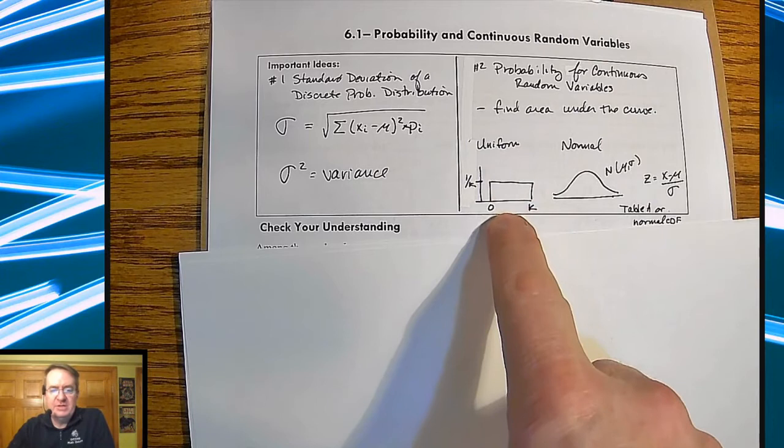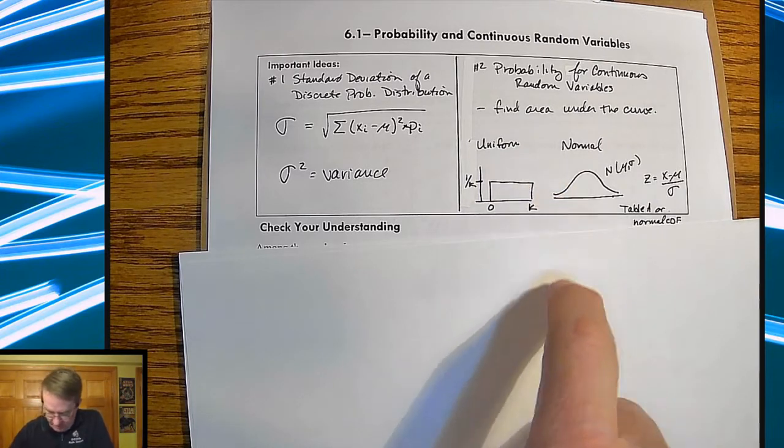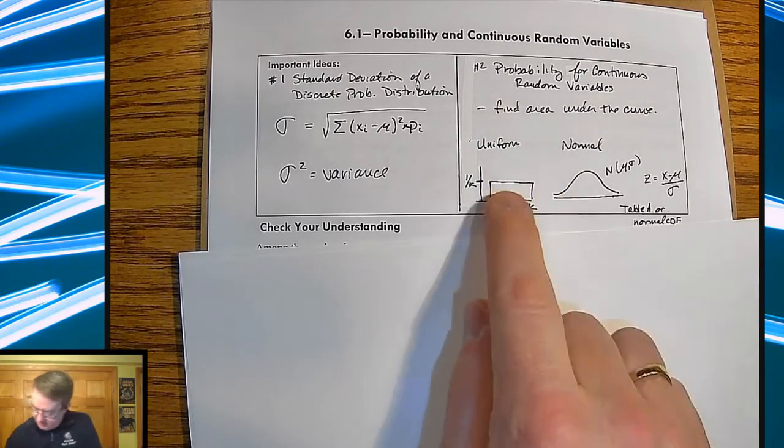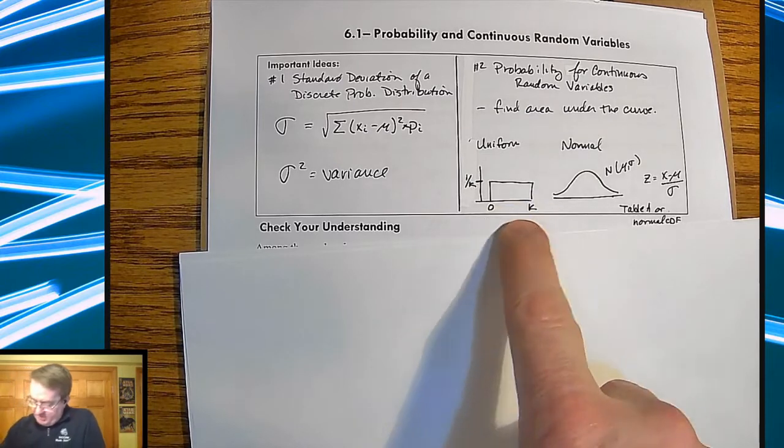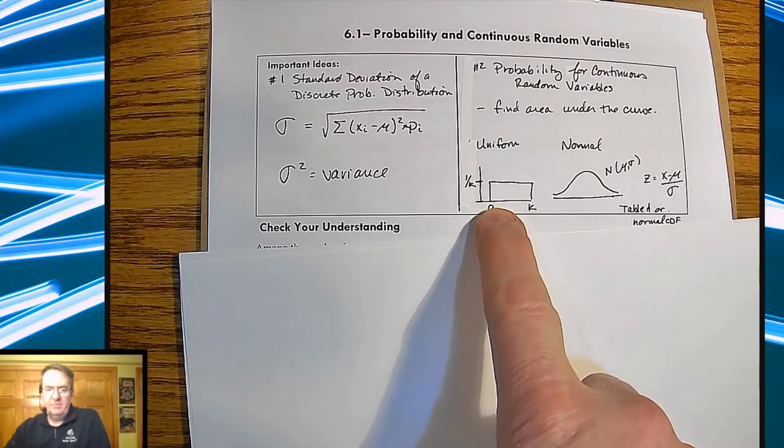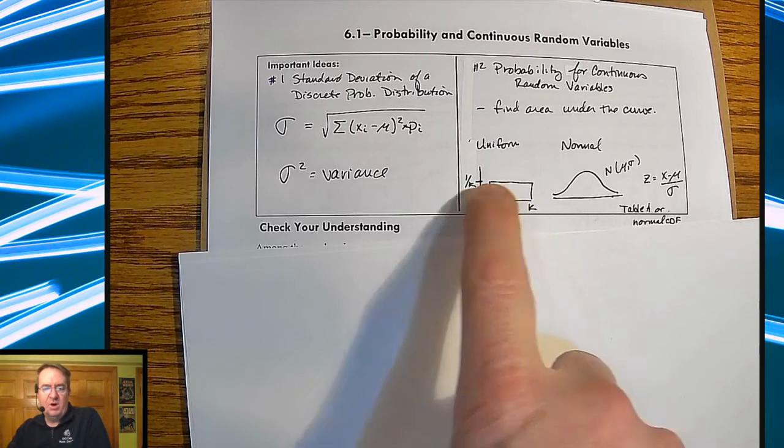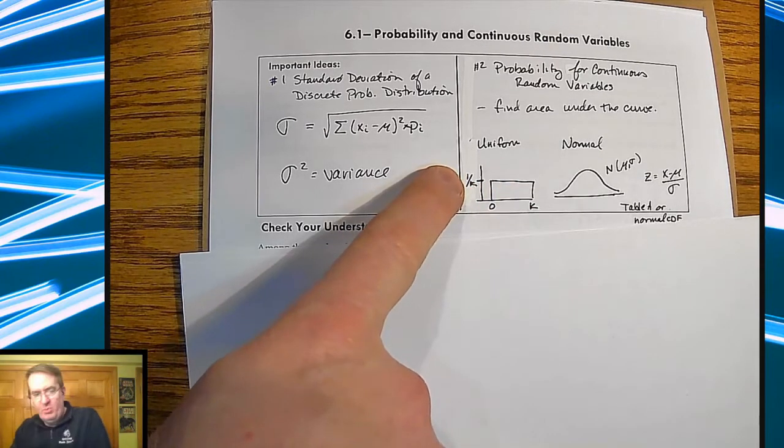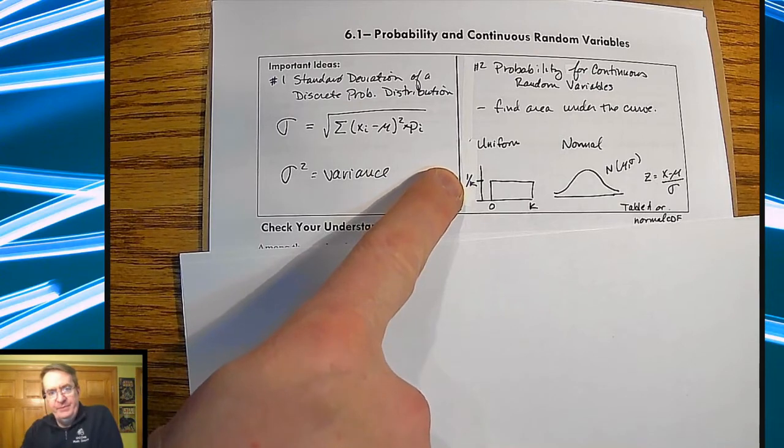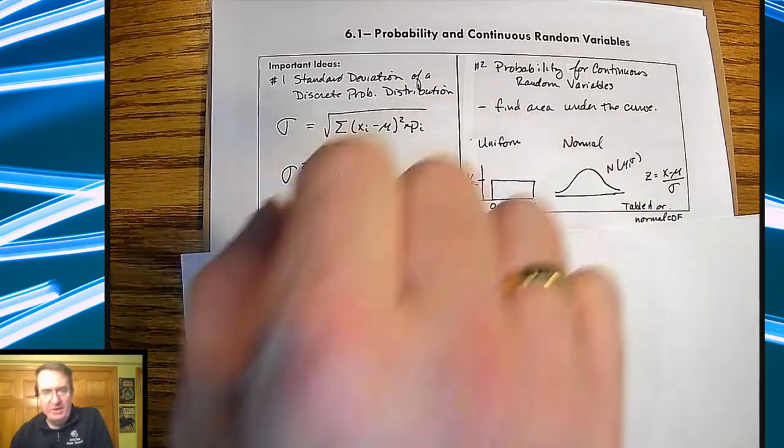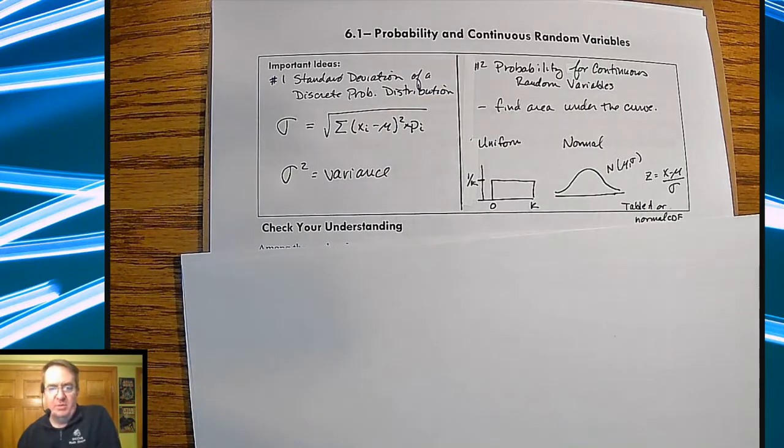There are two different ones we're going to deal with now. There's uniform, which means it's going to be the same all the way across. The things to remember is that if it's a width of K, since this area has to equal one, this height is going to be one over K. Because remember, width and height would end up having to equal one.